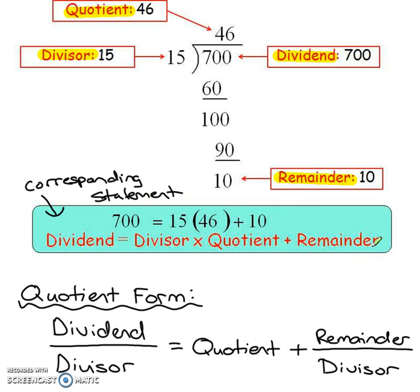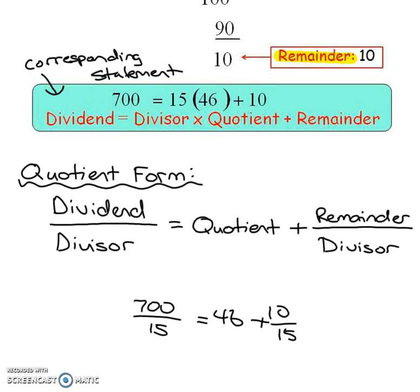If you want to write your answer in quotient form, well that is the dividend over the divisor, which is equal to the quotient plus the remainder over the divisor. Now that's written like this. 700 over 15, because you were taking the 700 divided by the 15 before. It's equal to your quotient, but then you have to add your remainder, and there's your divisor underneath it. This is written in fraction form, whereas this one is not. So that's the biggest difference between the two.